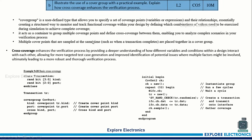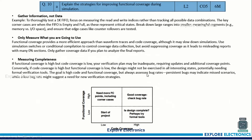Then: illustrate the use of covergroup with a practical example and explain how cross coverage enhances the verification process. First explain how the covergroup is defined and useful in setting cover points, then explain cross coverage. A code snippet for basic cross coverage is given. The tenth question: explain strategies for improving functional coverage during simulation. Some points are given — and a diagram shows that at the start of a project there is low functional coverage and code coverage, but when cover points and cover bins are added, coverage increases.